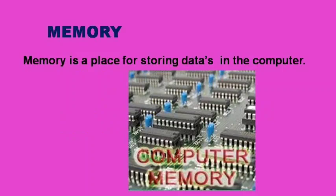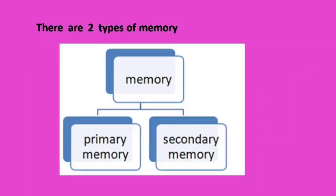What is meant by memory? Memory is a place for storing data in the computer. The computer memory has two types: one is primary memory and another one is secondary memory.